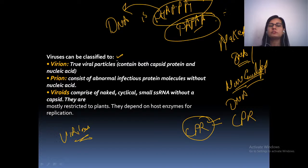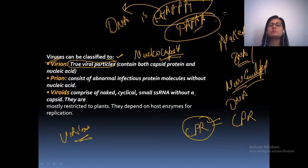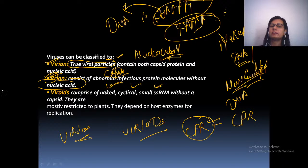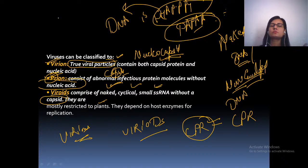Viruses can be classified into virions, prions, and viroids. Virions are the true viral particles containing both the capsid and the nucleic acid — the nucleocapsid. Prions consist of abnormal infectious protein molecules but do not have nucleic acid — just the capsid. Viroids consist of naked, cyclic, small single-stranded RNA without a capsid, and are mostly restricted to plants.